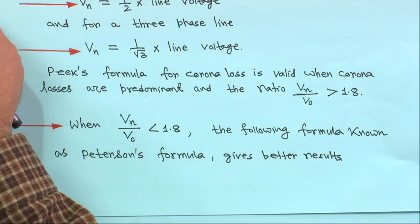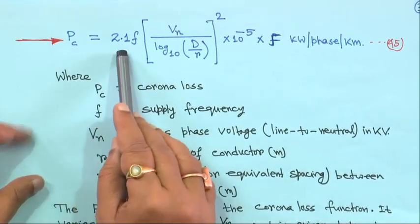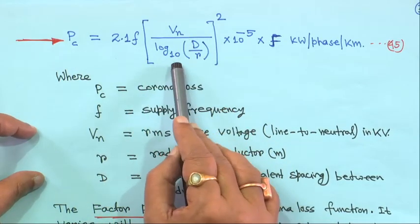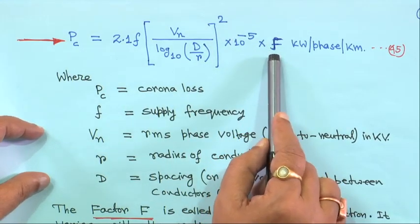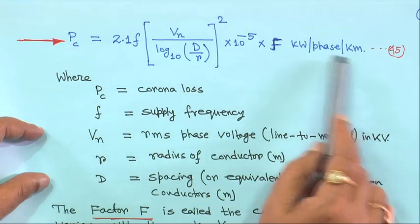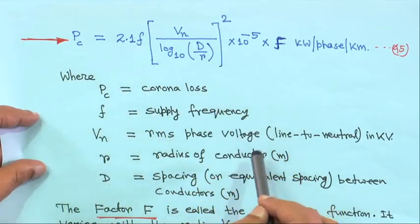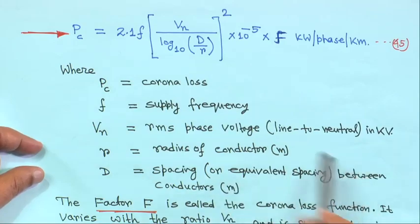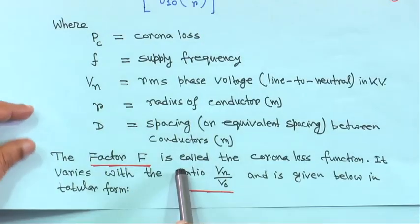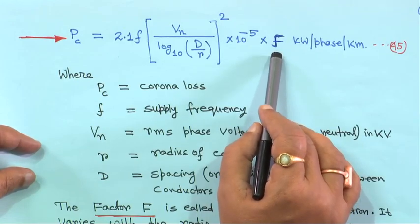When VN/V0 is less than 1.8, Peterson's formula gives better results. Peterson's formula for corona loss is: PC = 2.1 × f × [VN / log₁₀(D/R)]² × 10⁻⁵ × F kilowatt per phase per kilometer. Here F is called the corona loss function — a variable that depends on the ratio VN/V0 and is given in tabular form.